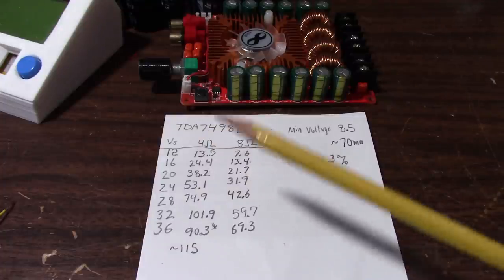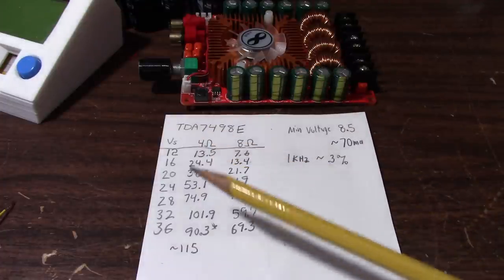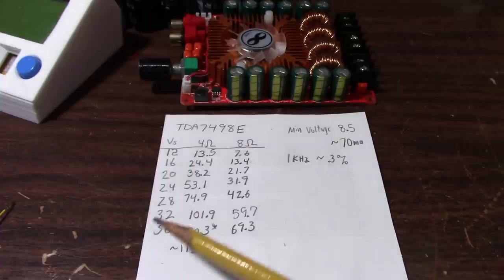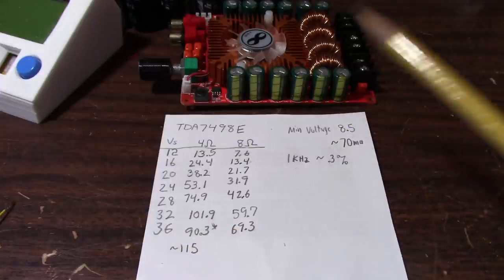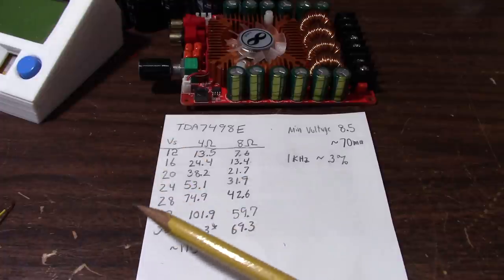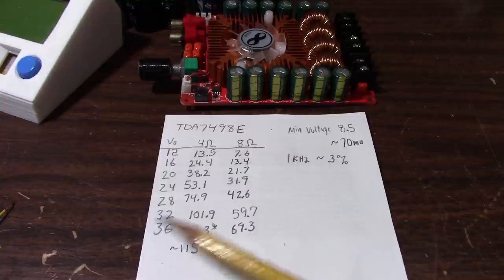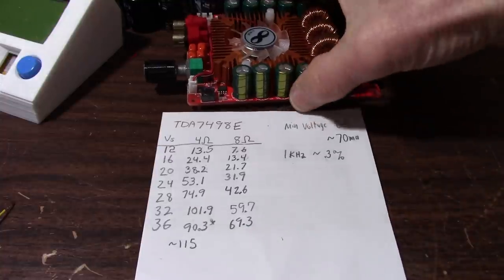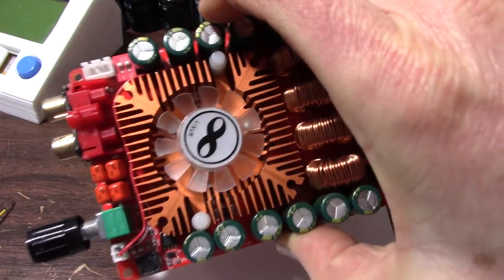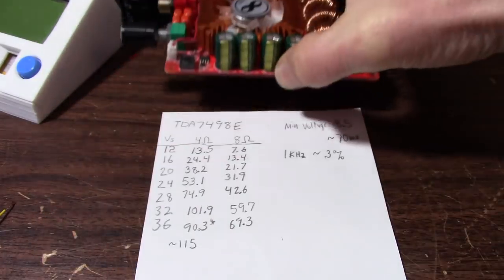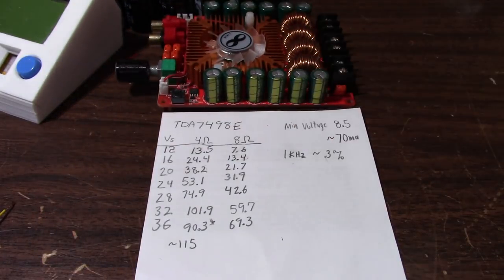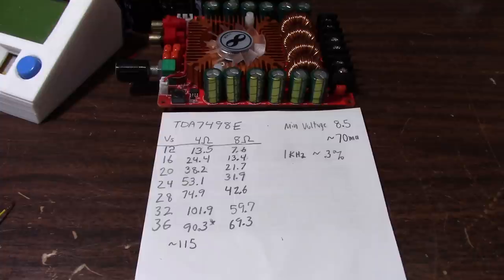However, I will say this. I wouldn't run these Chinese boards at 4 ohms maximum supply voltage. I would back off a little bit, especially if you want the thing to last. I would stick with 32 volts max. You still get about 102 watts per channel. Think about that. For $20, you're getting over 100 watts per channel. Not bad at all. What do you want for your 20 bucks?